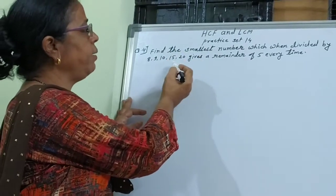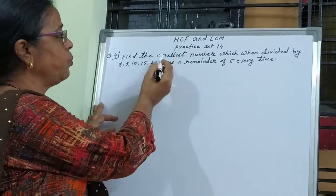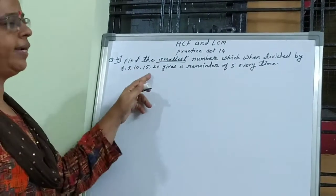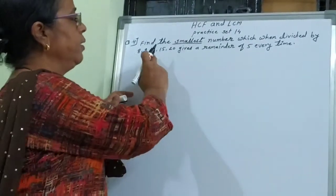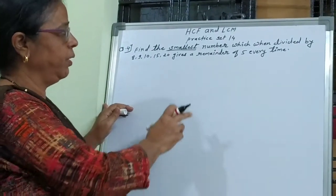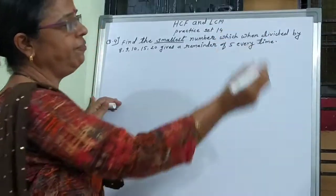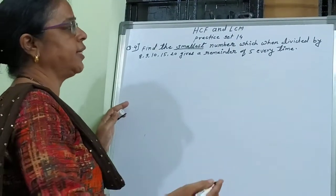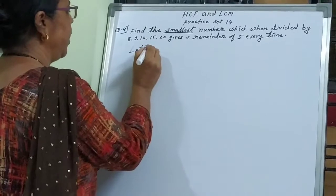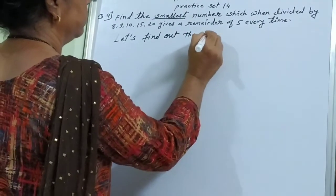This question means that we have to find the LCM. The LCM will give us a number that is completely divisible. So let's first find out the LCM of these numbers.